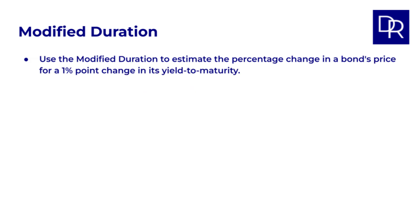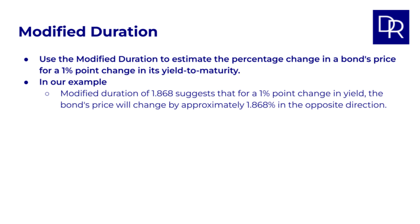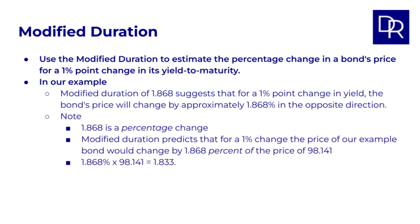We can use this modified duration to estimate the percentage change in a bond's price for a 1% change in its yield to maturity. In our example, a modified duration of 1.868 suggests that for a 1% change in yield, the bond's price would change by approximately 1.868% in the opposite direction. It is important to note that 1.868 is a percentage change, so for our example bond priced at 98.141, the price would change by 1.868% times 98.141, which is 1.833.